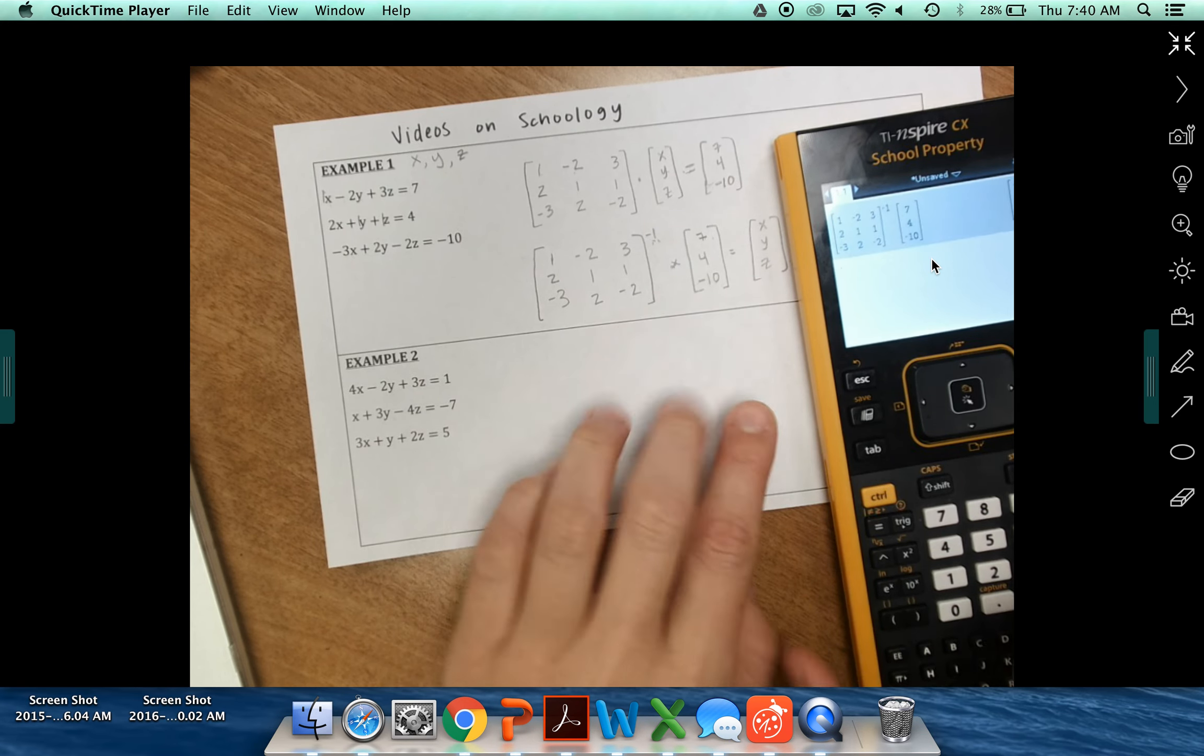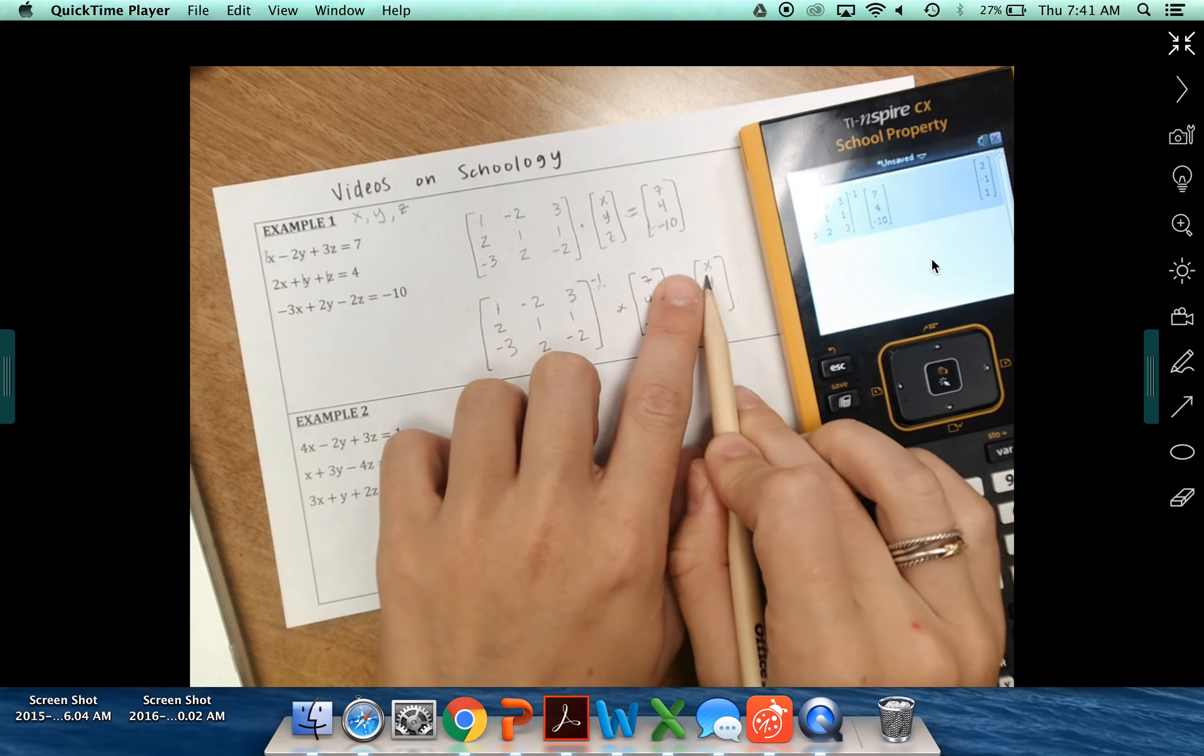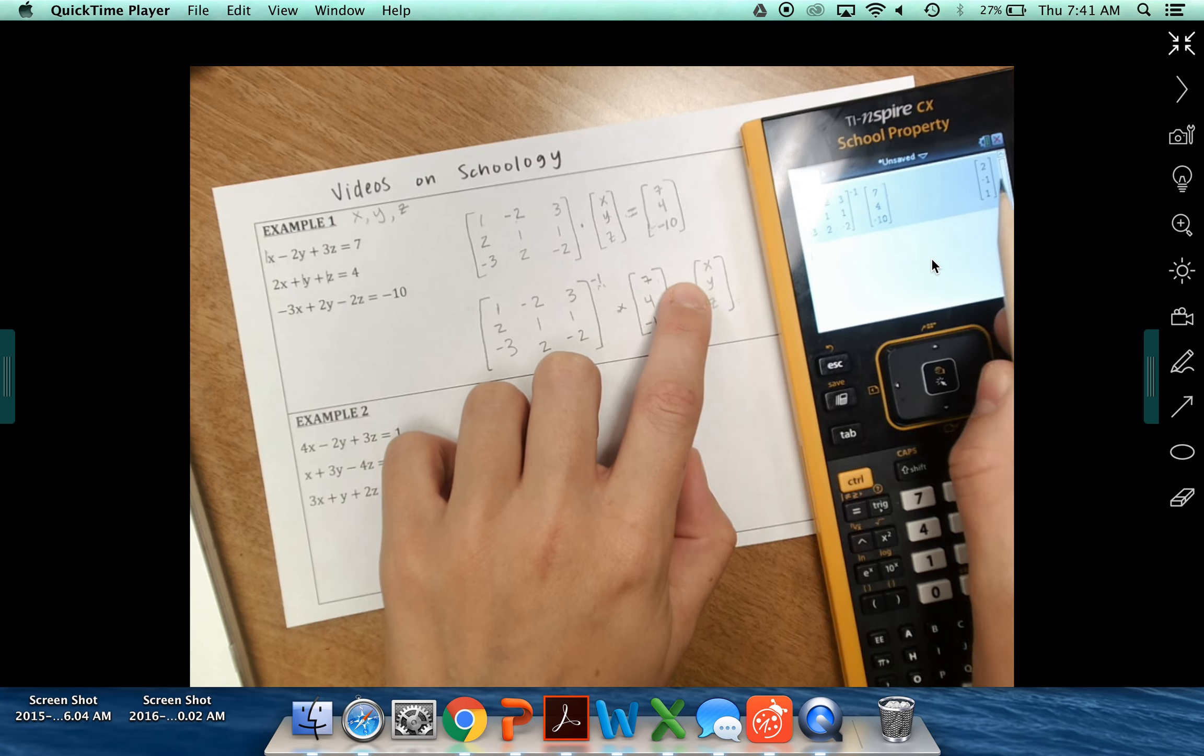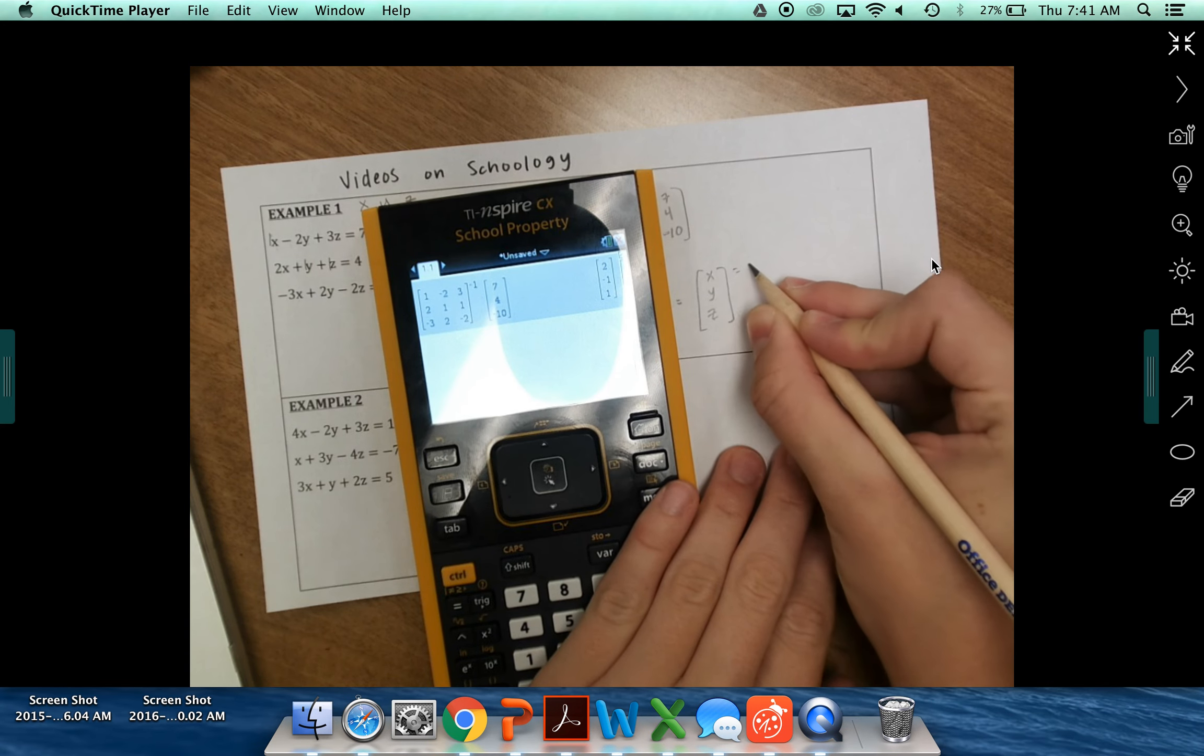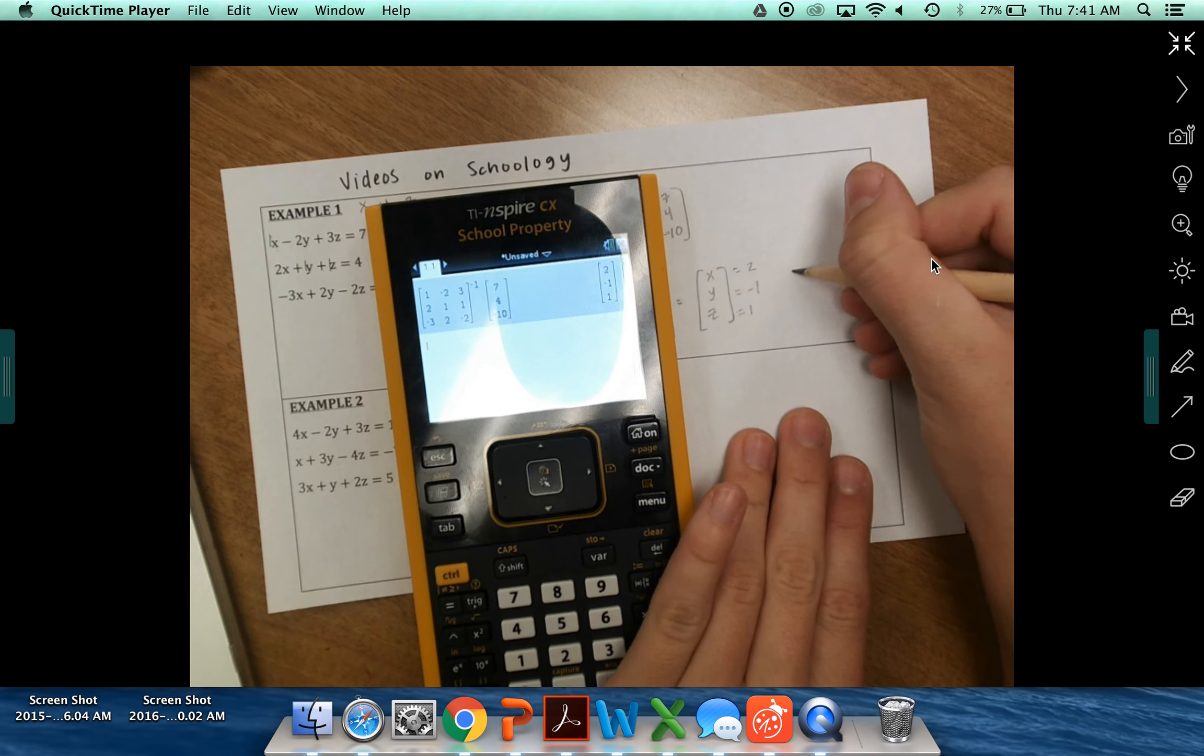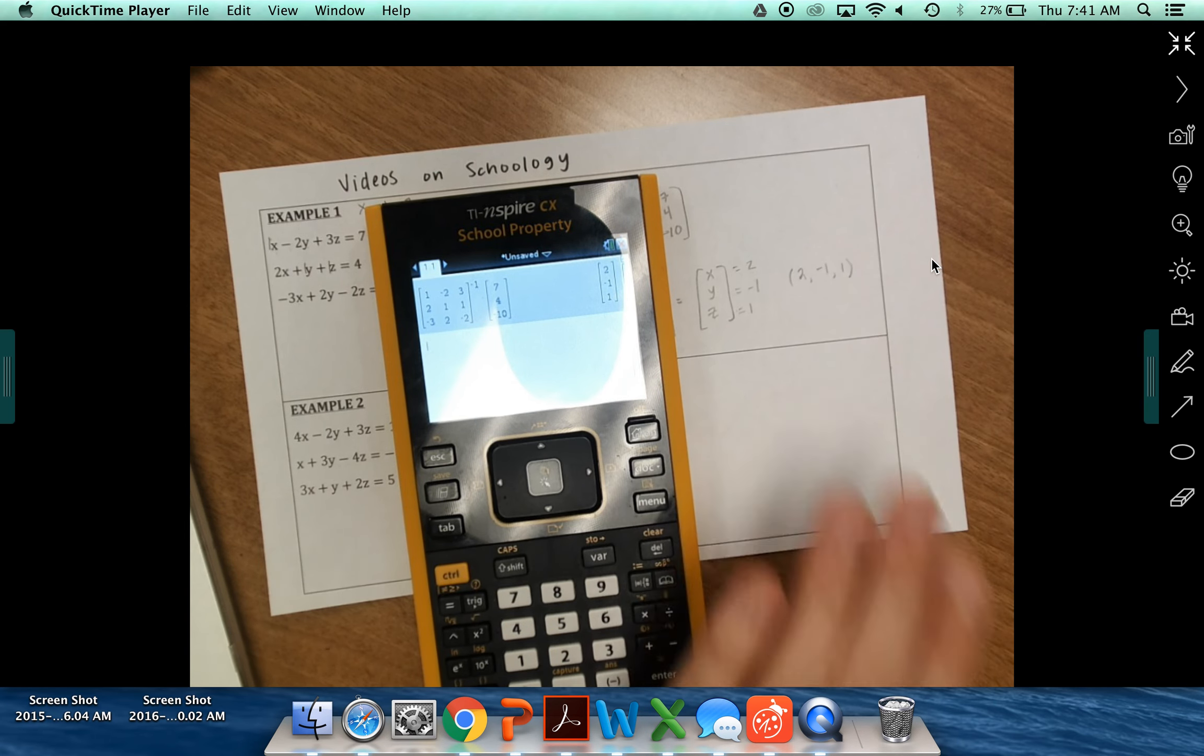Press enter. And you can see I've got my x, y, and z values here. Right? So x is 2. Y is negative 1. And z is 1. So I have x equals 2, Y equals negative 1, Z equals 1. So that tripled order pair would show up as 2, negative 1, and 1.